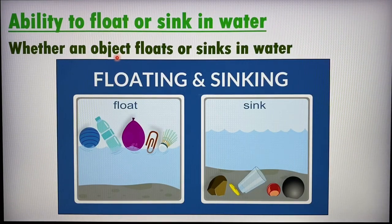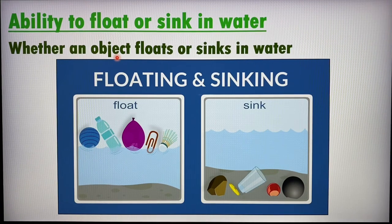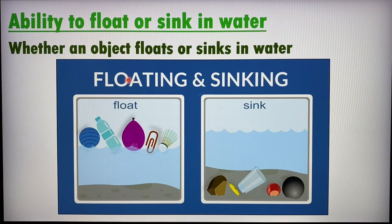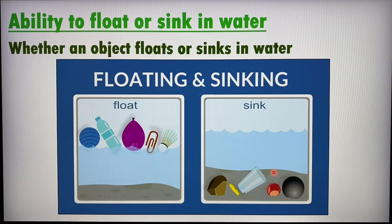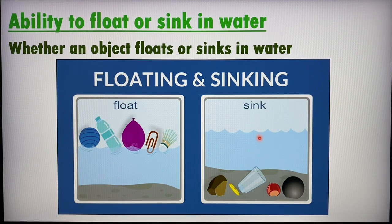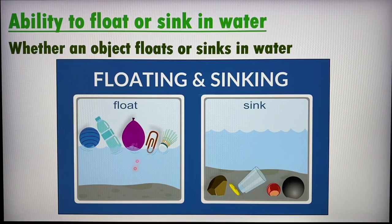Ability to float or sink in water is another very important property covered in primary three. Very simply, how do we test whether an object floats or sinks? Just put it in a container. Objects at the surface are floating; objects at the bottom are sinking. We use a glass or plastic container so we can see through and better observe which objects are floating or sinking.